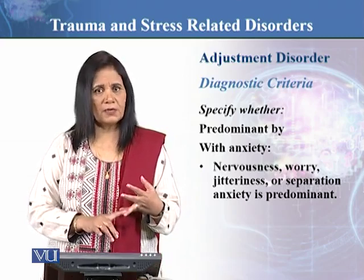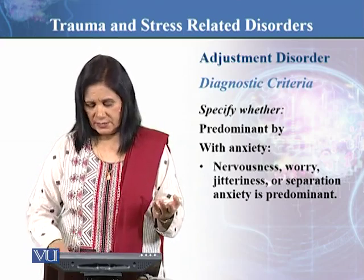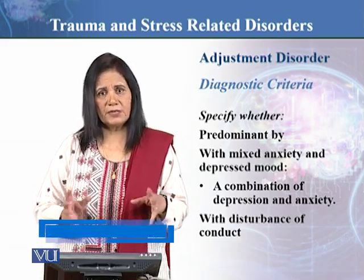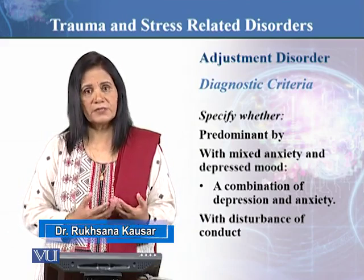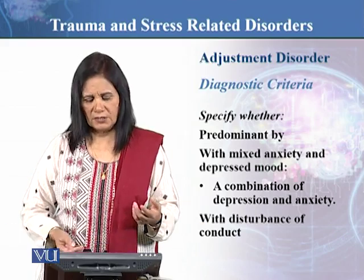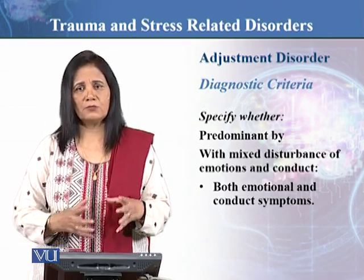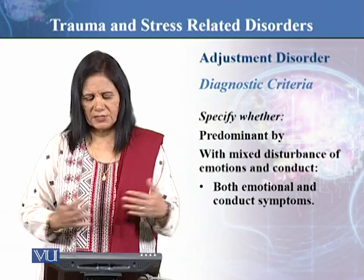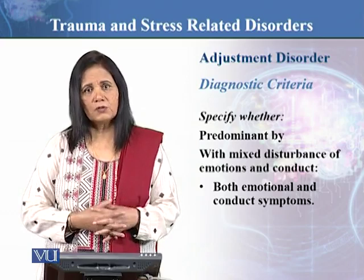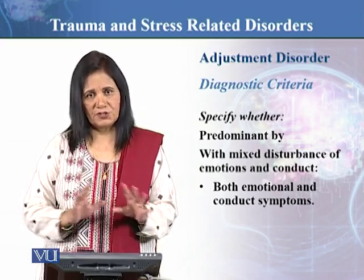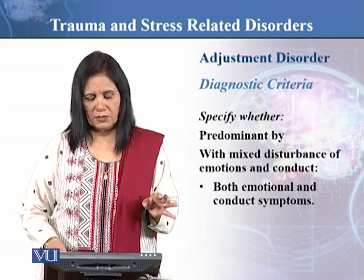So you have to specify whether it is with depressive features, or whether there is a combination of depression and anxiety features, and also predominantly with disturbance of conduct. So you can have a combination of anxiety, depression, and conduct disorder. You have to see the combination and permutations of manifestations that need to be specified while diagnosing adjustment disorder.